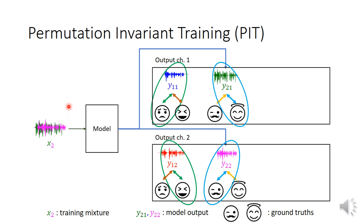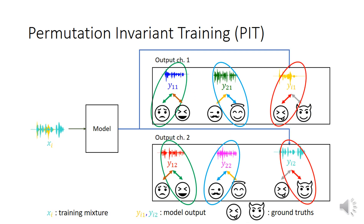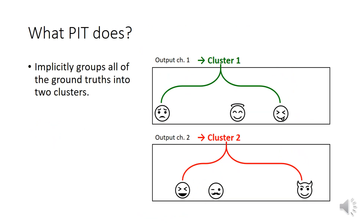We then input another training sample X2 into the model, and this time PIT may choose the blue corresponding label assignment. In every epoch, this process is done for all training samples. If we only look at the chosen ground truth for each output channel — like a list for output channel 1 and another list for output channel 2 — this can be seen as the clustering of the ground truth into two groups. That is, PIT implicitly groups all the ground truth into two clusters.